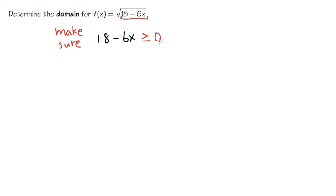Zero is actually okay, and greater than 0 is okay as well. So this is how you set up for the domain whenever you have a square root function. You need to make sure the inside is greater than or equal to 0. And once we have this inequality, we can continue with our usual business.